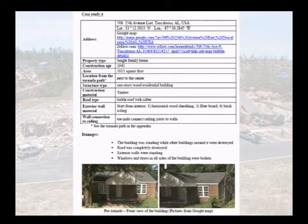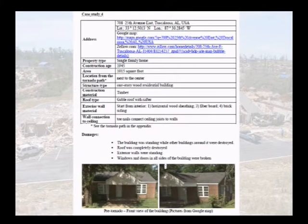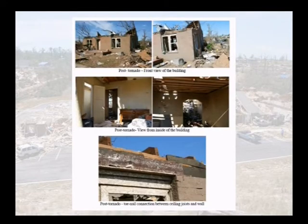We had a number of detailed case studies. Here you can see what we have — address, various information — and we were able to pull a lot of that off of Zillow and other web-based pages. Then we had pictures before the tornado that you can see down below, and then the post-tornado condition, and we go through and detail exactly what the forensics was — if we could figure it out, because it wasn't always possible. You don't always know what happened first, but with hurricanes and straight wind, it's much easier.